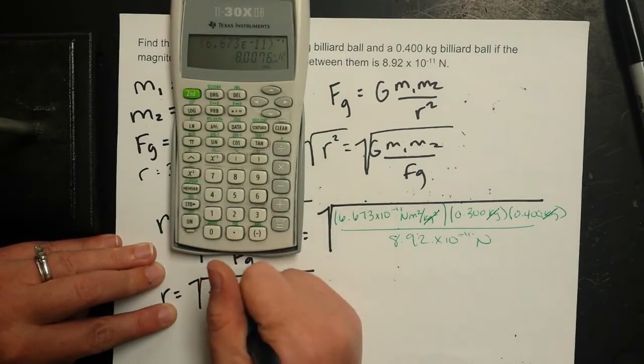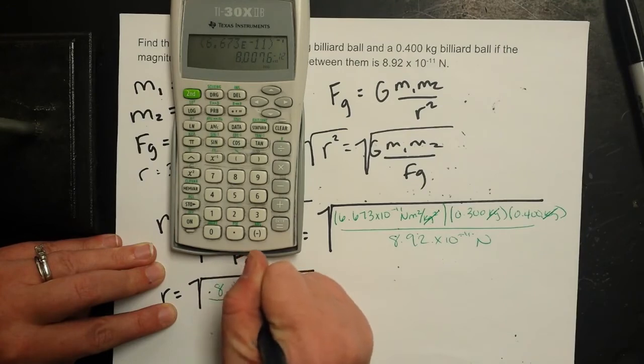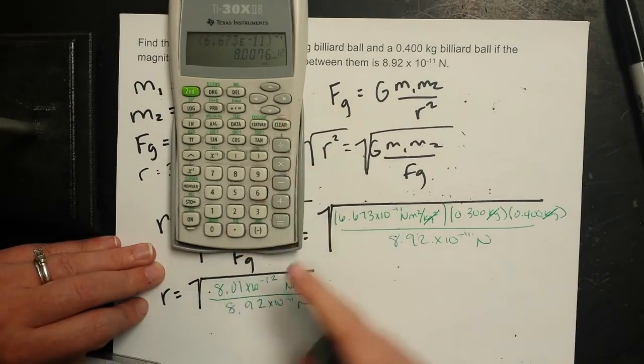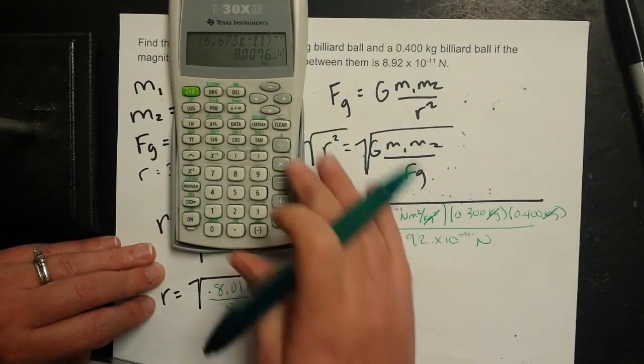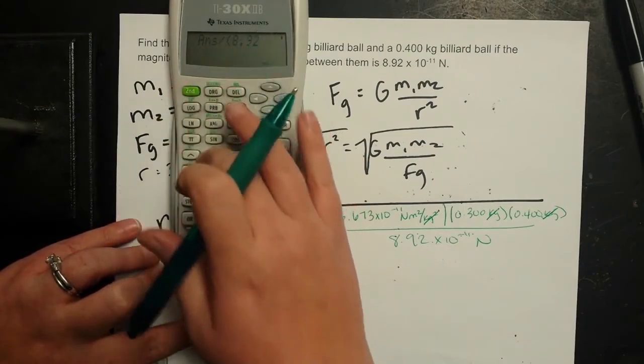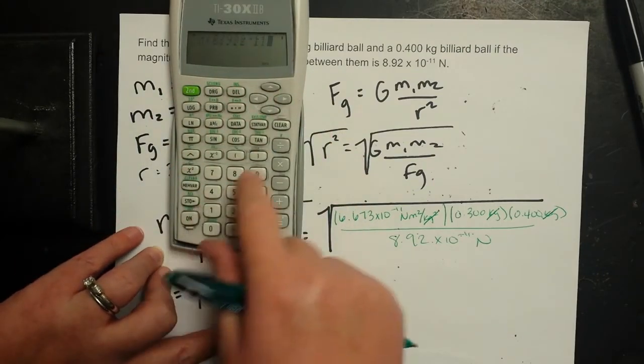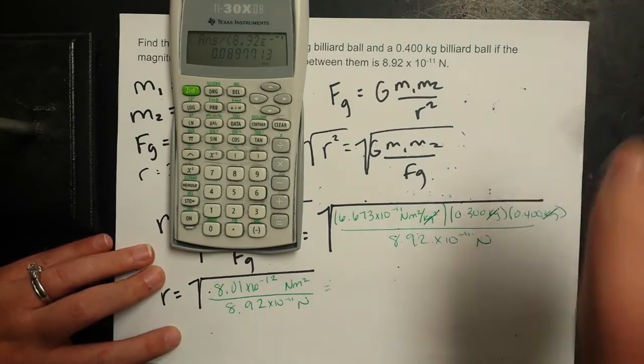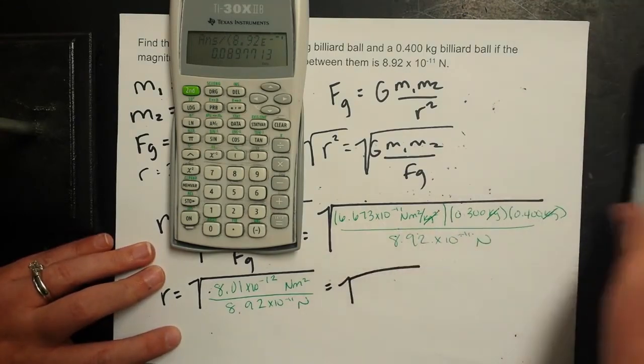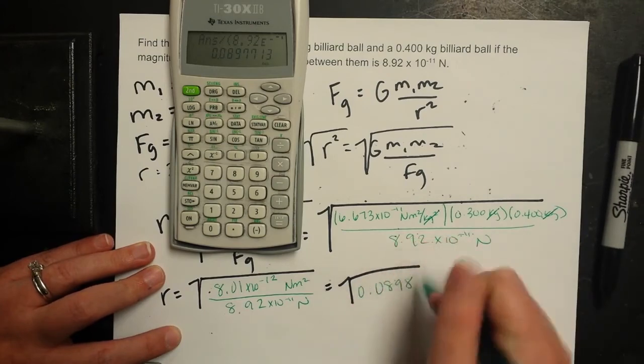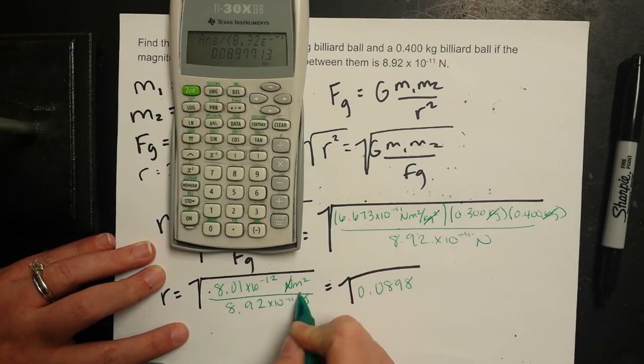And we get 8.01 times 10 to the negative 12th. I can take this numerator and divide it by my denominator. So divide it by 8.92 times 10 to the negative 11th. And I get that the radius is equal to the square root of 0.0898 meters squared.